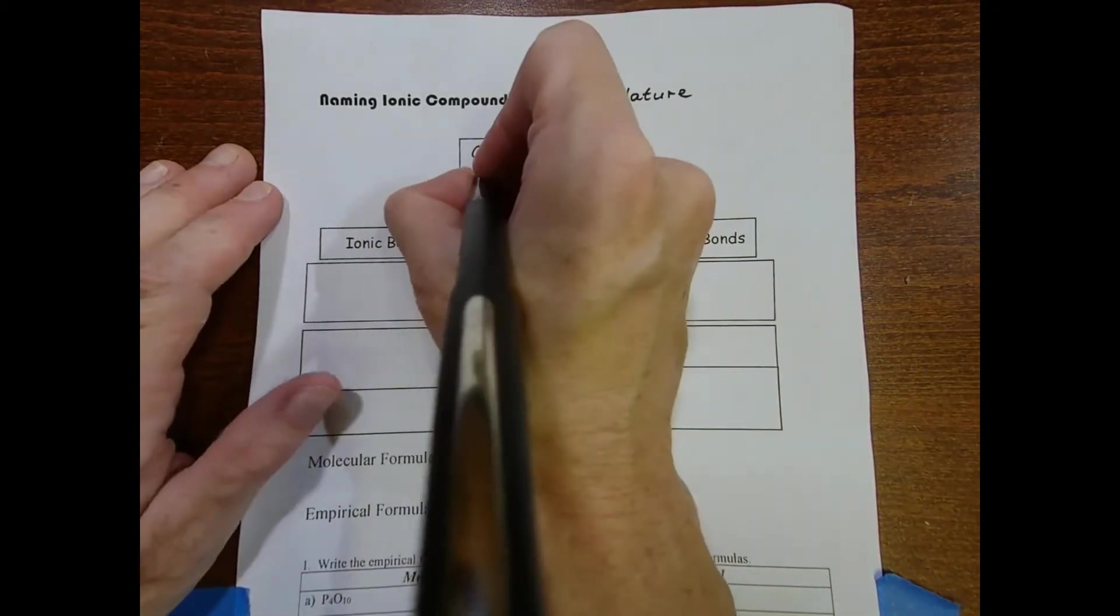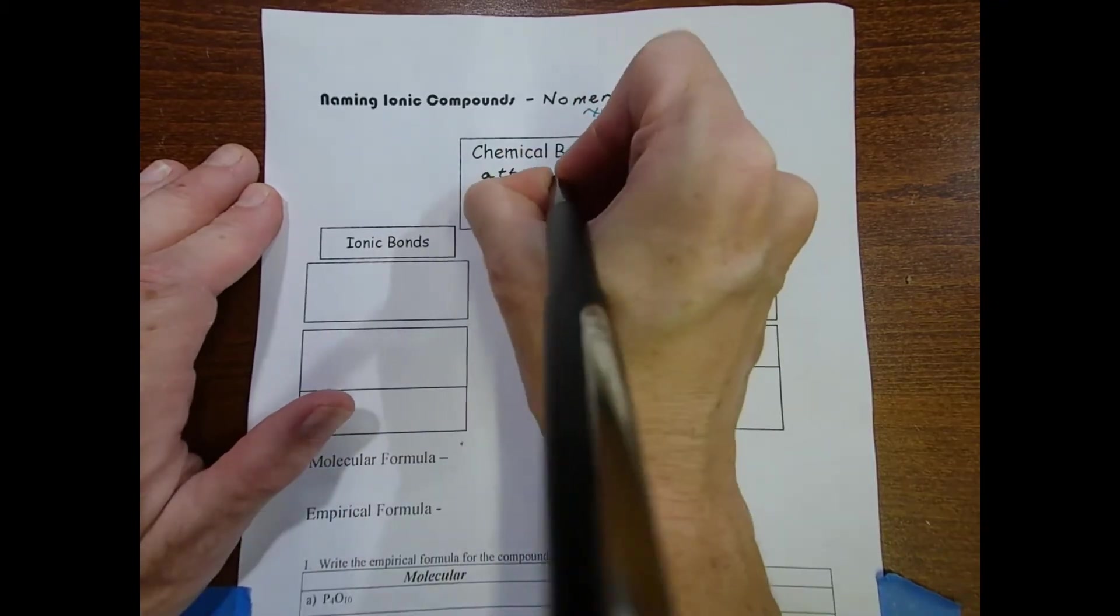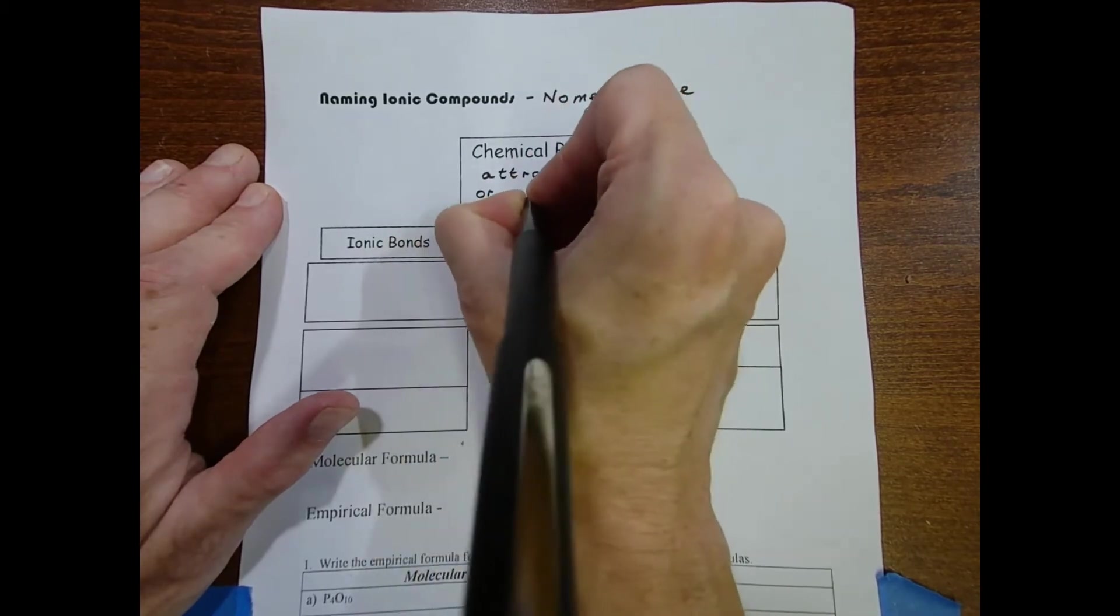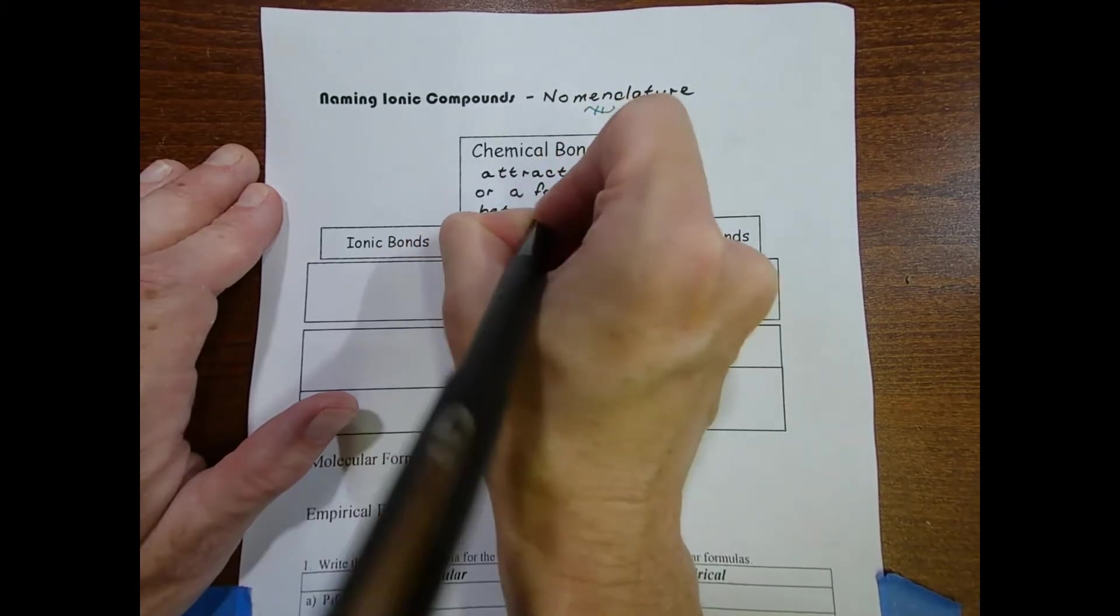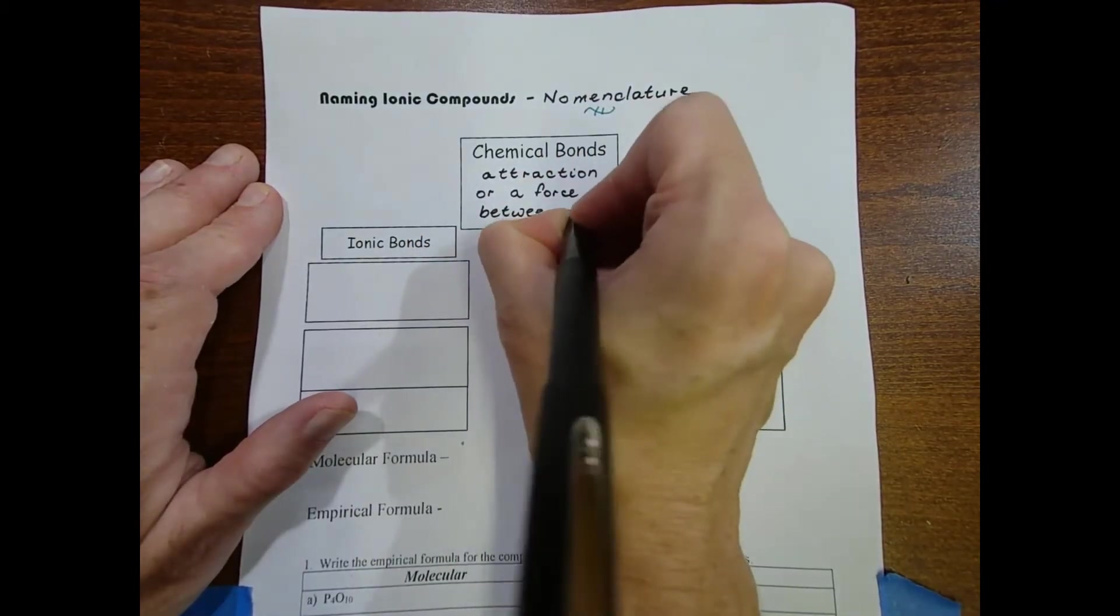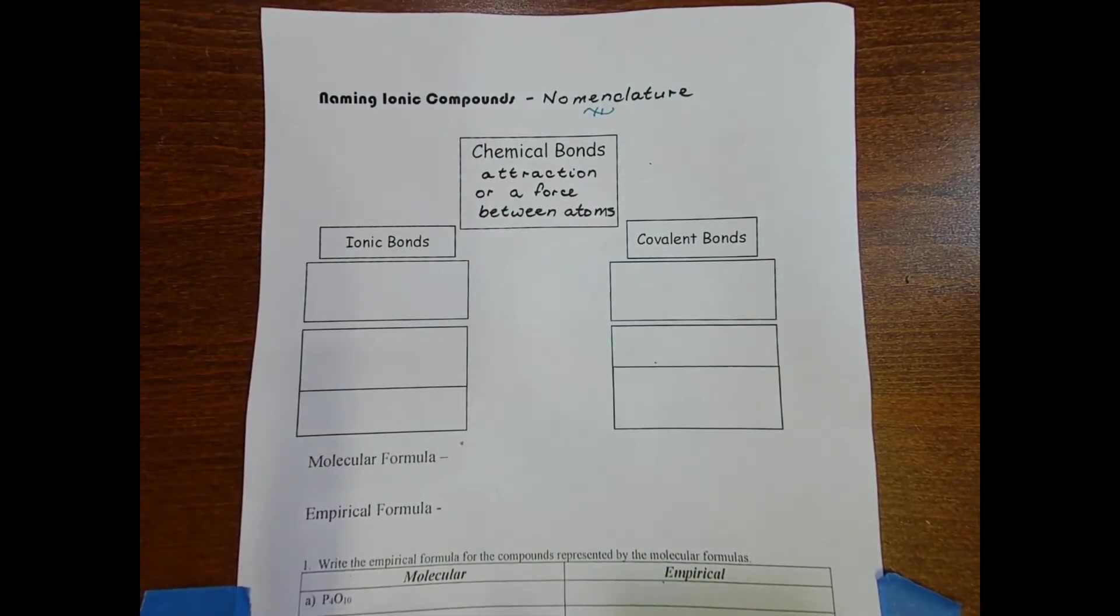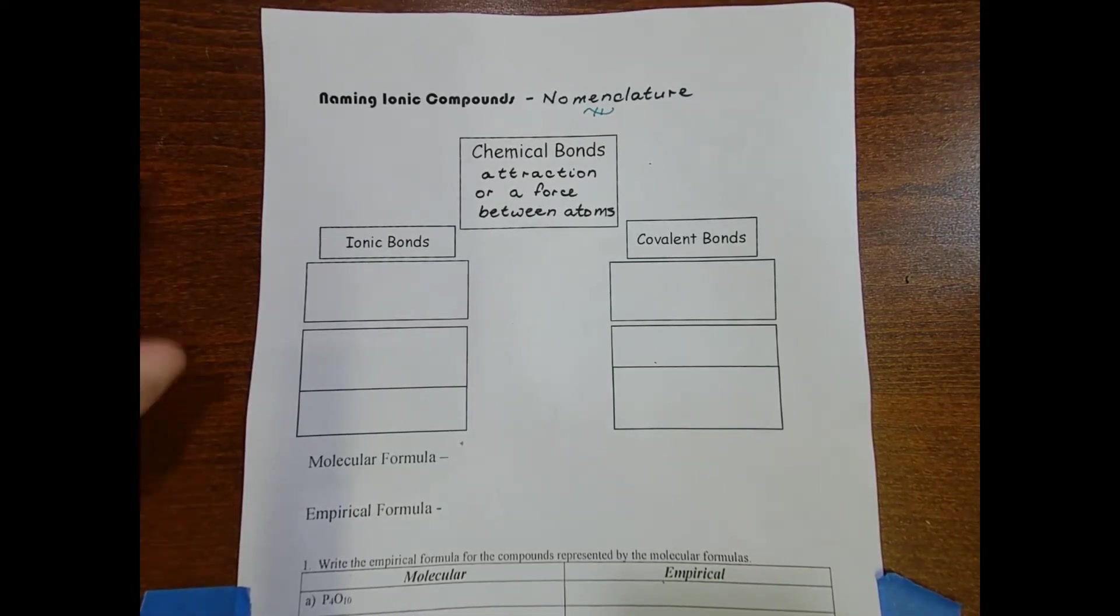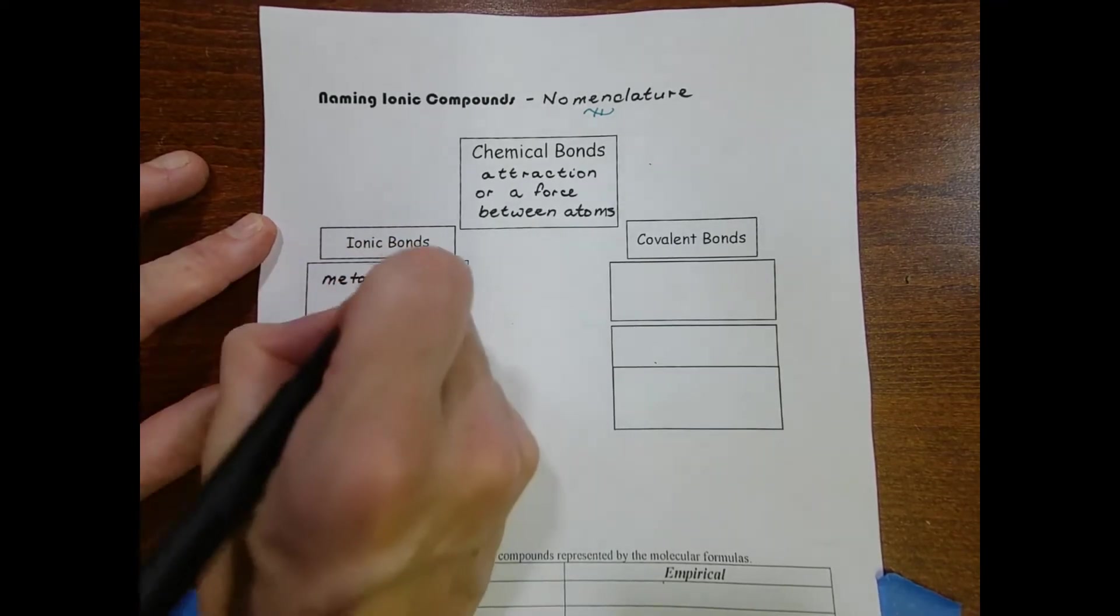A bond is simply an attraction or a force between atoms. We're going to subdivide chemical bonds into two categories. First let's look at ionic bonds. Ionic bonds occur between metals and nonmetals.